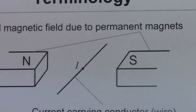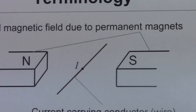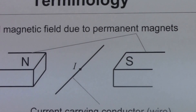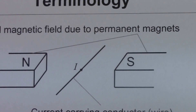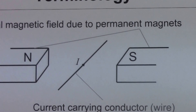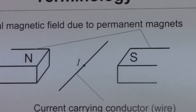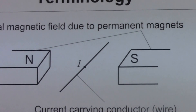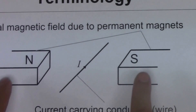Before we start, there are some terms that you need to be familiar with. First, we will look at what is external magnetic field. It is the magnetic field due to two permanent magnets shown in this diagram.